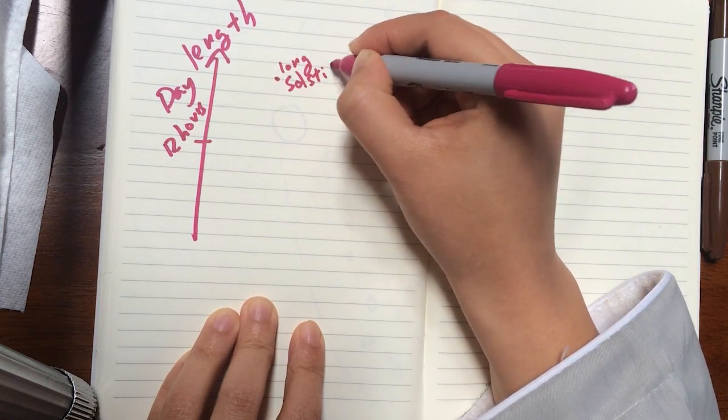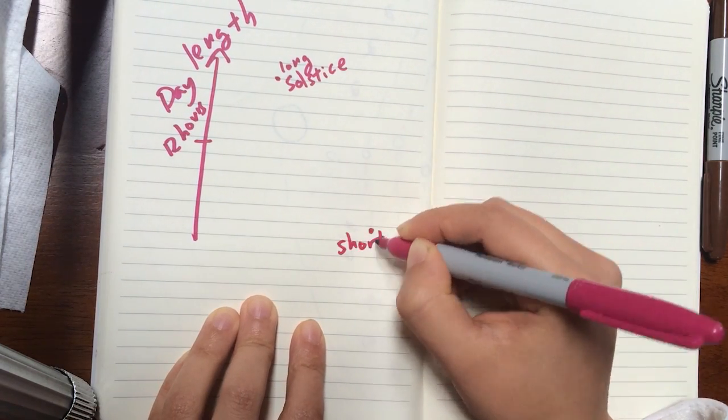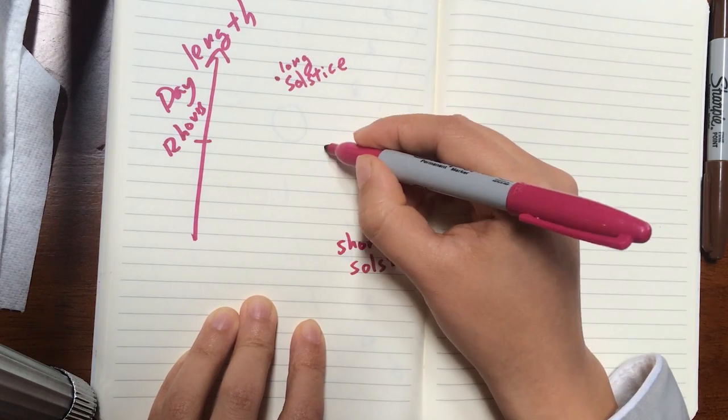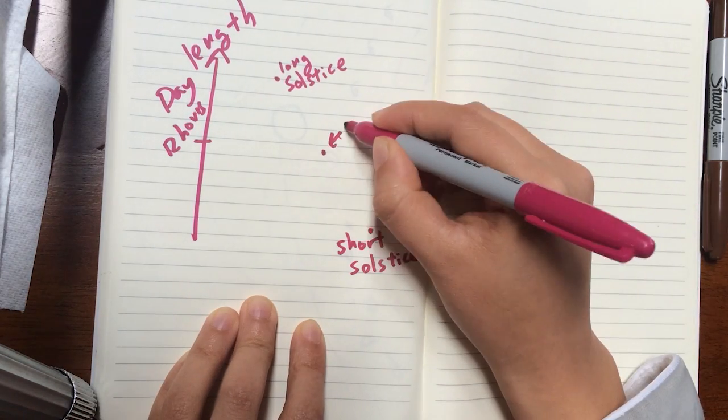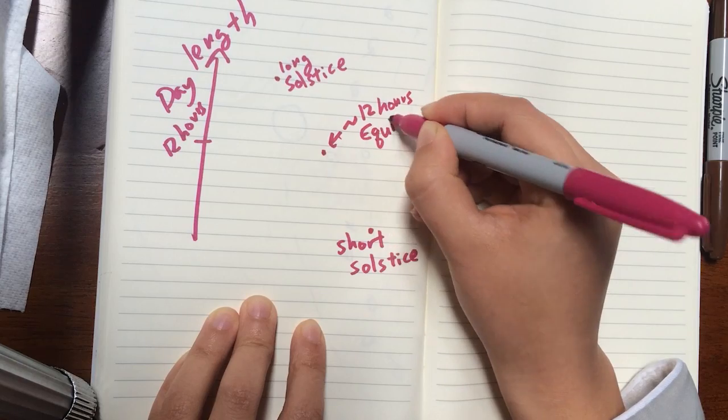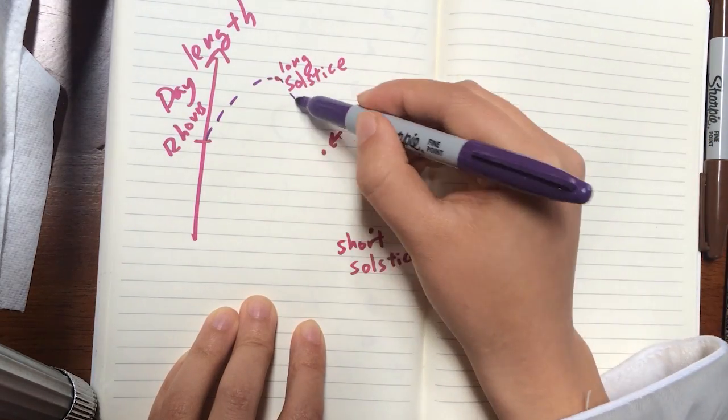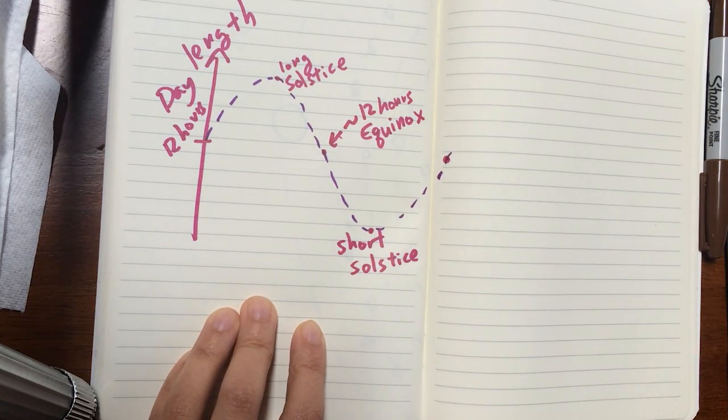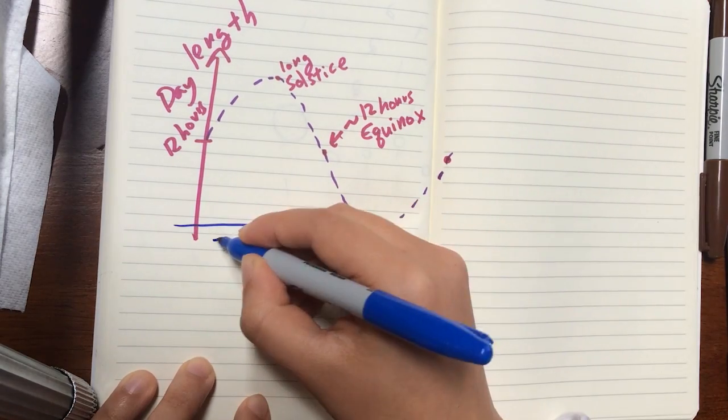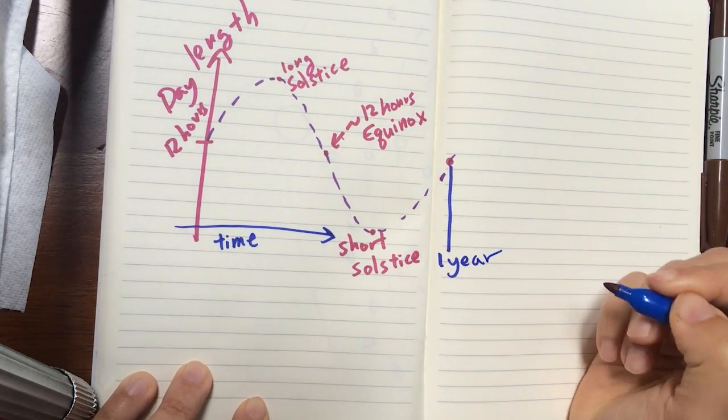Two days mark the longest and shortest days of the year, the solstices, and two days have roughly equal day-night cycles everywhere, the equinoxes. We can even chart out these days and see that they form a nice kind of cycle. Days getting longer, and nights getting shorter, and nights getting longer, and days getting shorter.